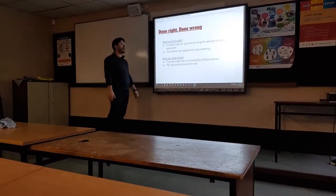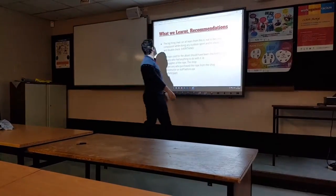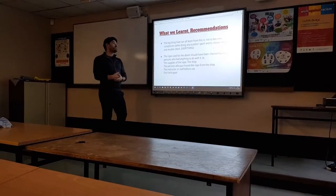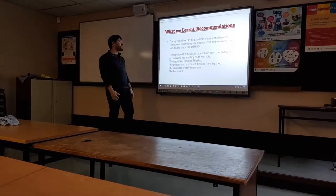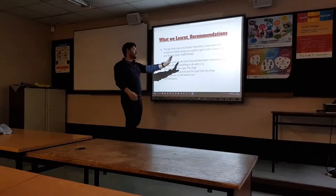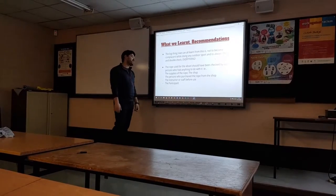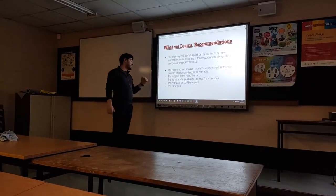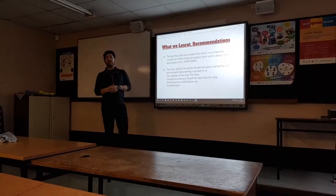What was done wrong: the rope length was not checked by sufficient people, and the rope was not tied at the end. What we learned and recommendations: the big thing is not to become complacent while doing any outdoor sport, and to always check and double-check everything. The rope used should be checked by each person involved — the supplier, the shop cutting the rope to the appropriate length, the person or college who purchased it, the instructor before the session, and the participant on the day.